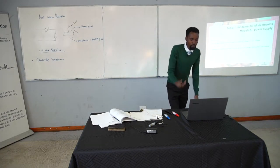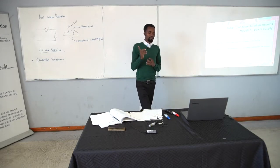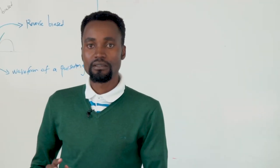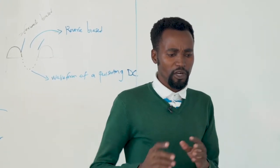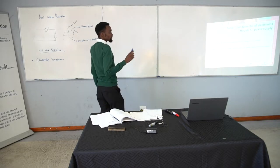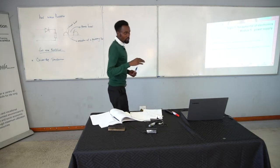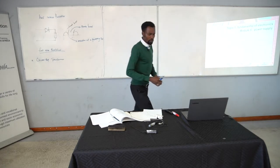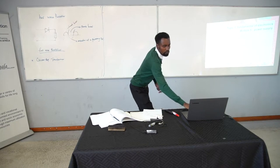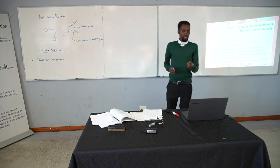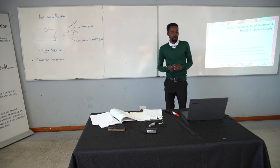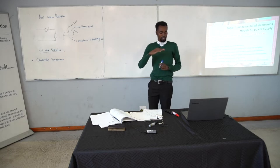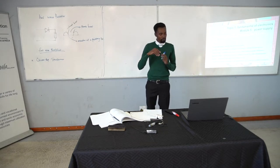Why do we have to use DC voltage? It is because our electronic devices or circuits use DC voltage — low current or low voltage. So to achieve that, we have the following stages: transformers, rectifiers, filtering, regulation, isolation, and also protection. I will explain each and every stage.